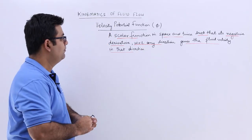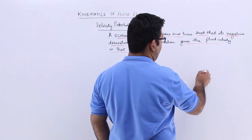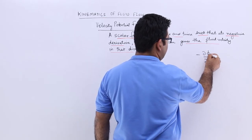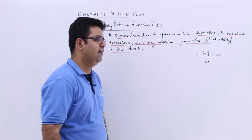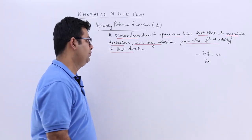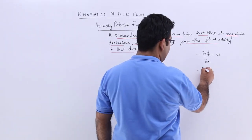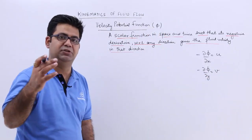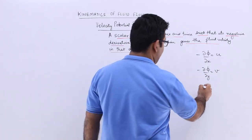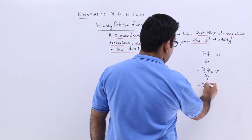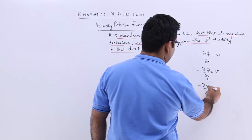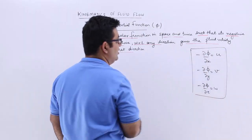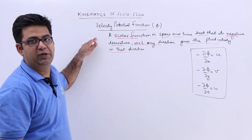So if I find out the negative partial phi by partial x, this gives the velocity in the x direction, u. If I find out minus partial phi by partial y, this gives v, the velocity in the y direction. And minus partial phi by partial z gives w. This is the mathematical definition of a velocity potential function.